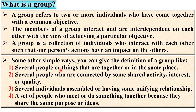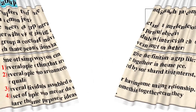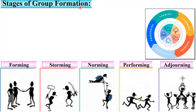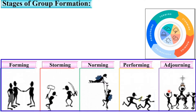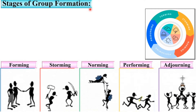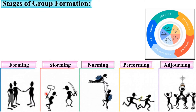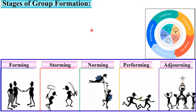These all are the concepts of a group. Now let us see the stages of group formation. There are five different stages in sequence: forming, storming, norming, performing, and adjourning. I have shown symbols for each, so from that you can also understand the detail of each stage.